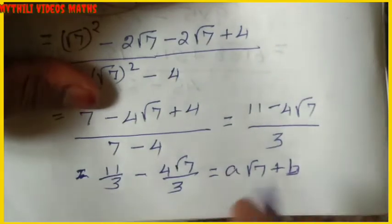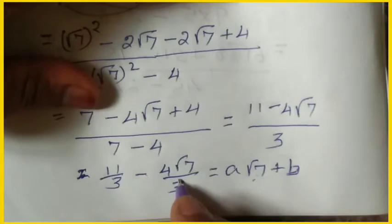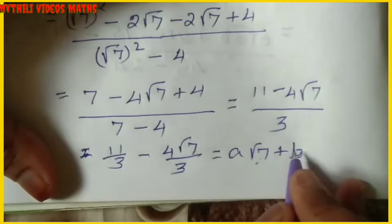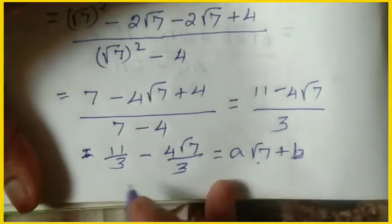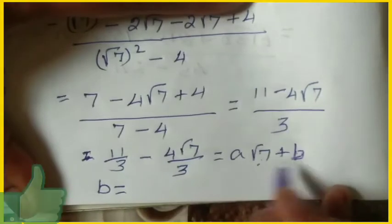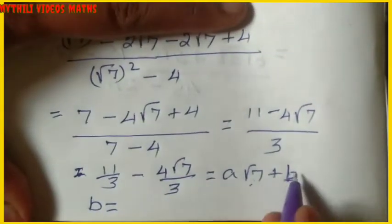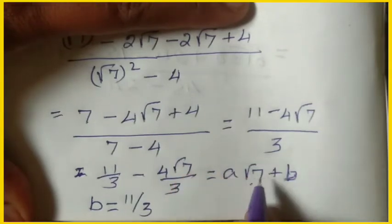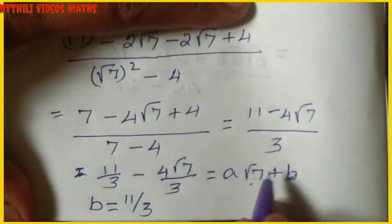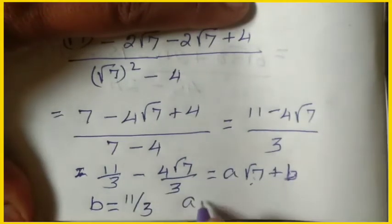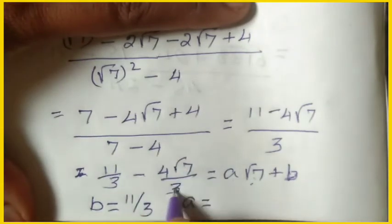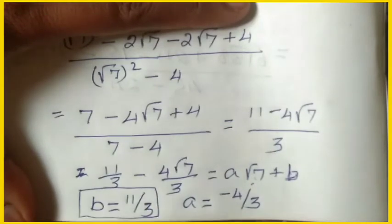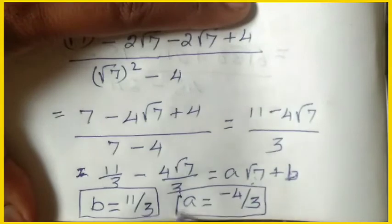Comparing coefficients: the coefficient of √7 gives a = −4/3, and the constant term gives b = 11/3. So the answers are a = −4/3 and b = 11/3. Is that clear?